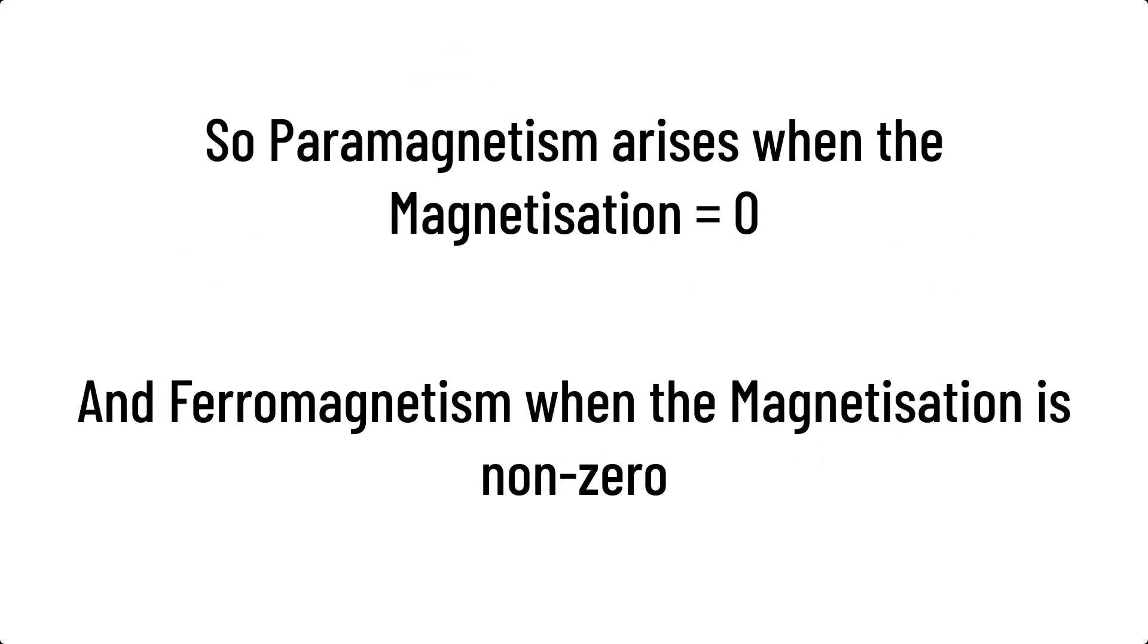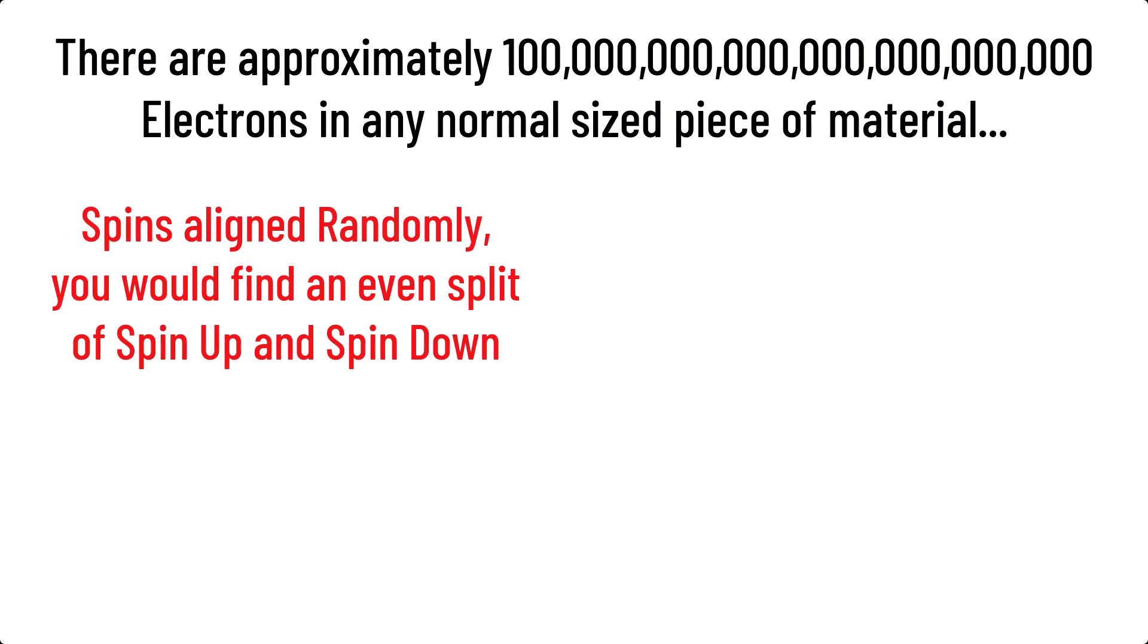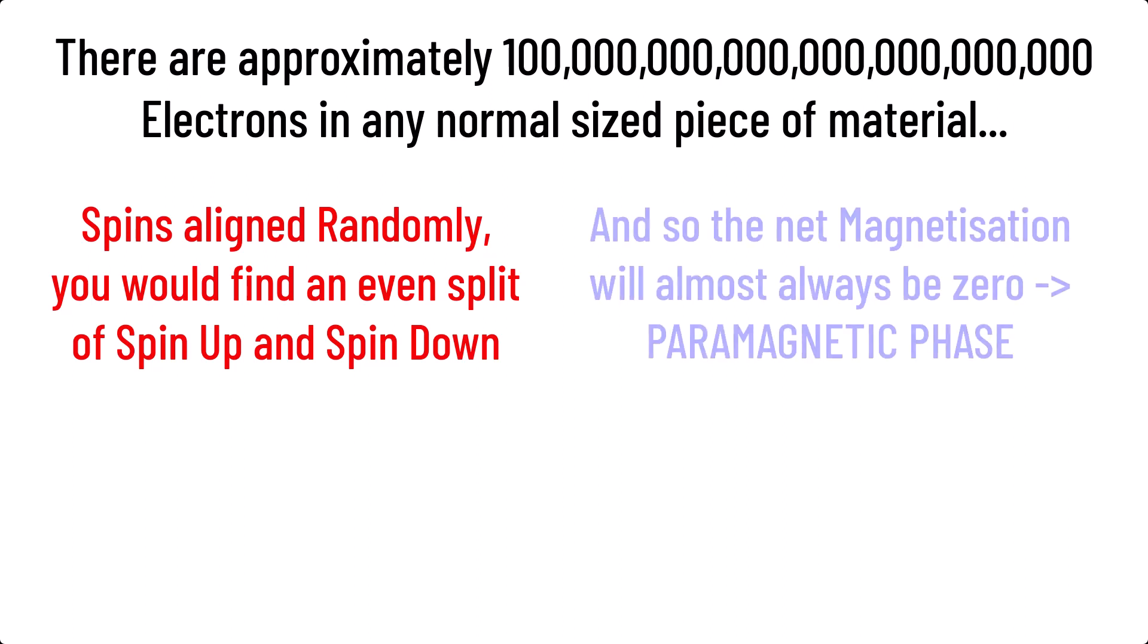So when a material is in a paramagnetic phase, it has no magnetization, due to it not generating its own magnetic field, and so must have a magnetization equal to zero. Real materials often contain over 10 to the 23 electrons, and so you can imagine that over a random distribution of spin up and spin down, with that many electrons, you would almost always average approximately zero net magnetization.